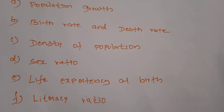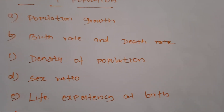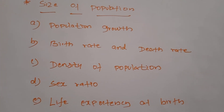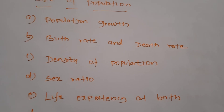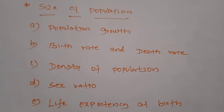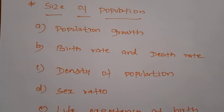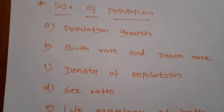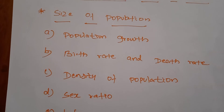The birth rate refers to the number of births per thousand of population. The death rate refers to the number of deaths per thousand of population. The birth rate was 39.9 in 1951 and fell to 21.9 in 2011. Kerala has the lowest birth rate and Uttar Pradesh has the highest birth rate. West Bengal has the lowest death rate and Orissa has the highest death rate among states. Bihar has the highest decadal growth rate of population while Kerala has the lowest.